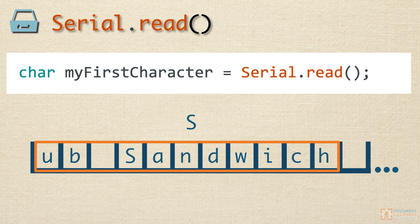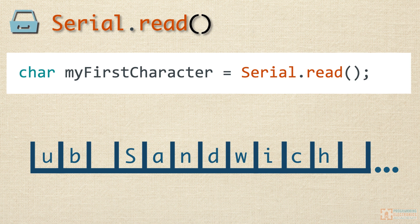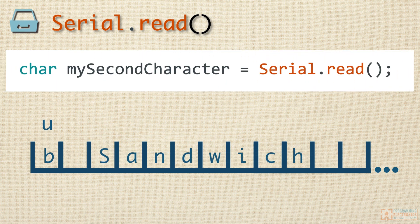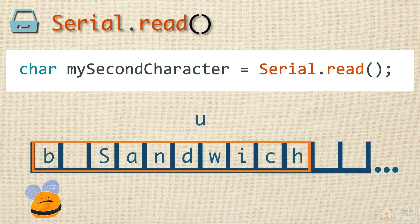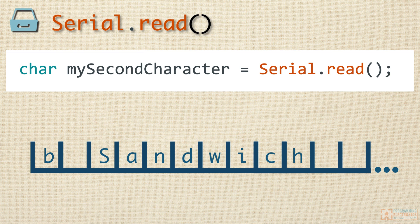The character — a capital S — will be stored in the variable myFirstCharacter, and there will only be 11 bytes left in the serial receive buffer. If we did this again, now saving the character to mySecondCharacter, then mySecondCharacter would be holding the value lowercase u, and 'b-sandwich' would be left in the serial receive buffer. So Serial.read() takes one byte at a time from the serial receive buffer.